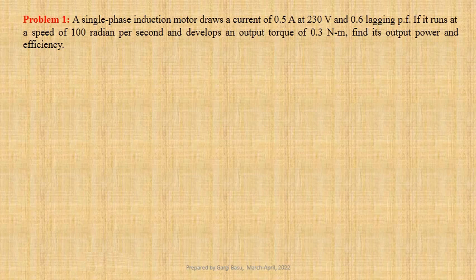A single phase induction motor draws a current of 0.5 ampere at 230 volt and 0.6 lagging power factor. If it runs at a speed of 100 radian per second and develops an output torque of 0.3 Nm, we have to determine its output power and efficiency. Let us first write down the given data.